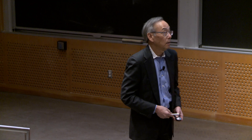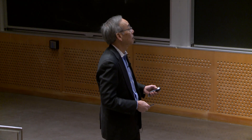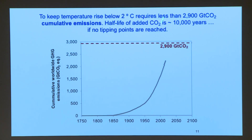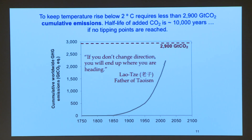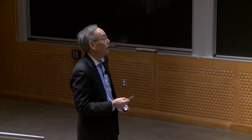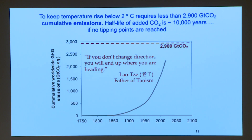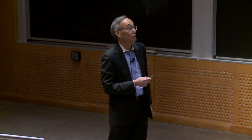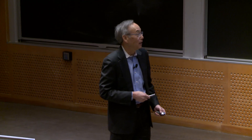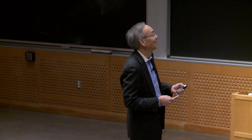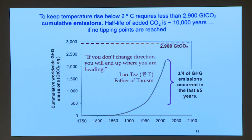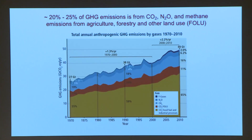The founder of Taoism was reputed to have said: if you don't change direction, you will end up where you're heading. The cumulative emissions since the last 65 years — it's a recent phenomenon. You don't have to go back to the beginning of the Industrial Revolution. So where does this stuff come from? From 1970 to 2010, this is carbon dioxide from fossil fuels, industrial processes, and electricity generation; carbon dioxide from forestry and land use; methane, of which at least half — probably two-thirds — are from agriculture; N2O primarily from agriculture due to fertilizer runoffs; and then fluorine gases.